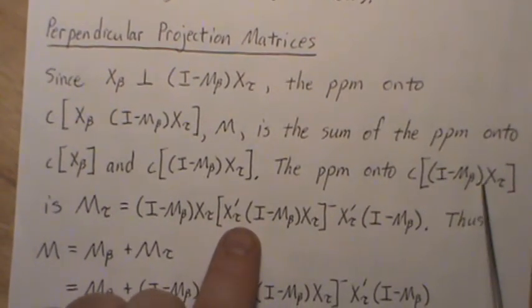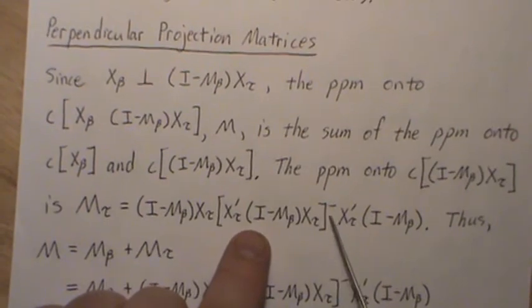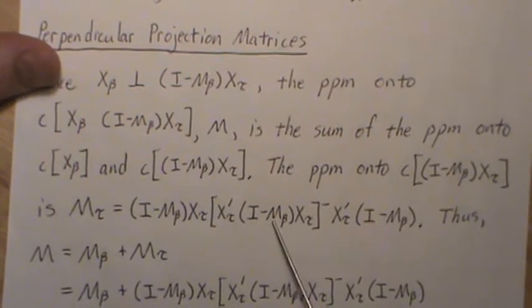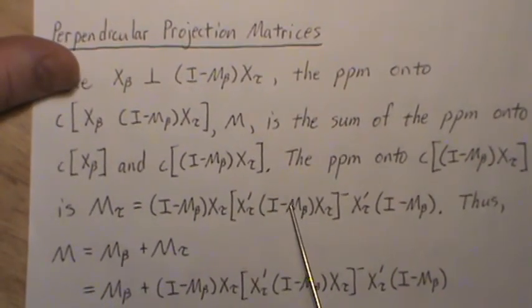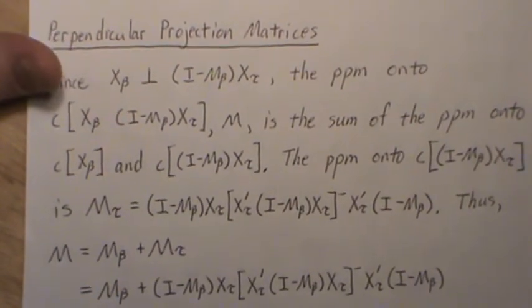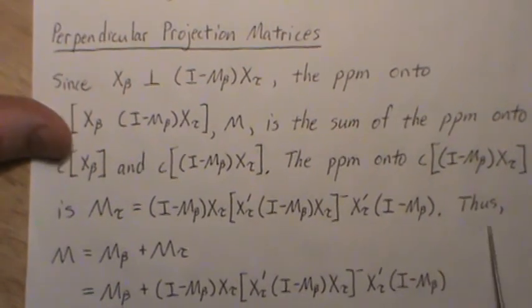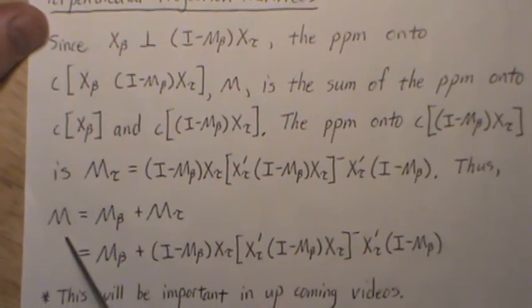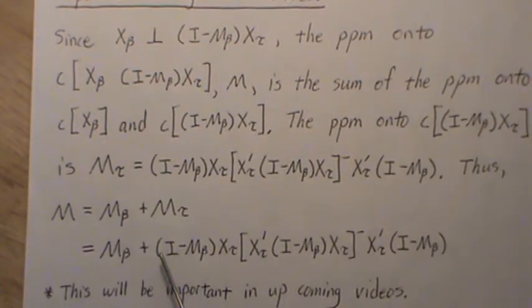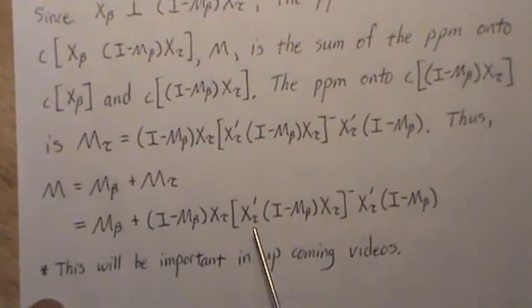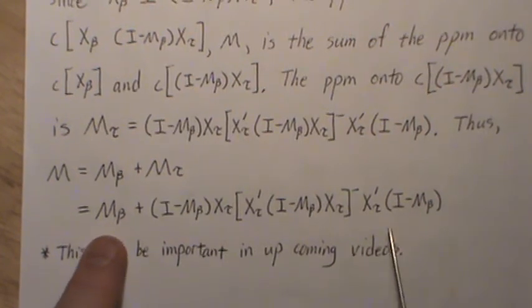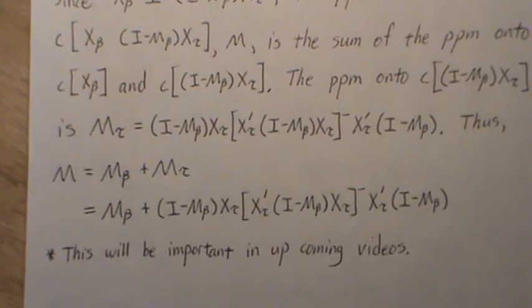Since the column spaces are orthogonal, the perpendicular projection matrix M onto the whole combined column space is the sum of the individual perpendicular projection matrices — M_beta plus M_tau. There's a separate video called 'The Sum of Perpendicular Projection Matrices' that proves this if you want more details. The perpendicular projection matrix M_tau onto the tau column space is derived using that column space transposed, and since (I - M_beta) is idempotent, multiplying gives just one copy. So M = M_beta + M_tau, which we can write out in full notation.